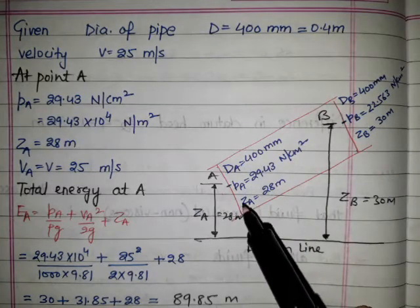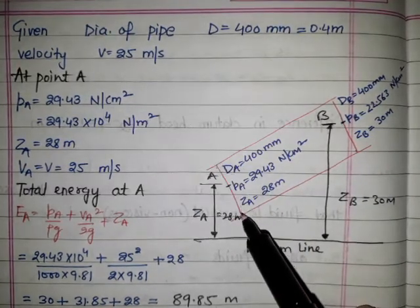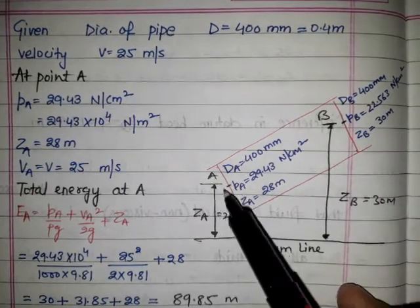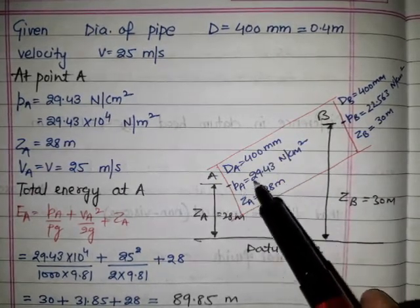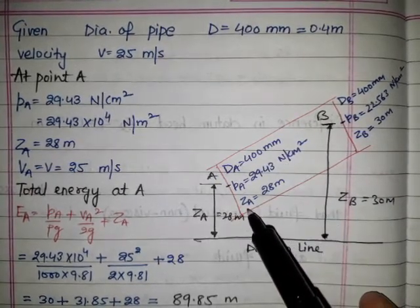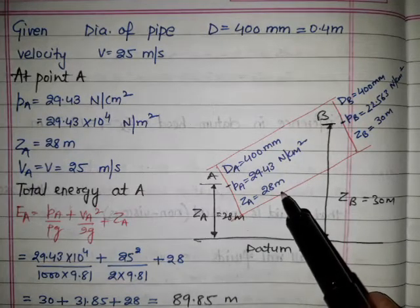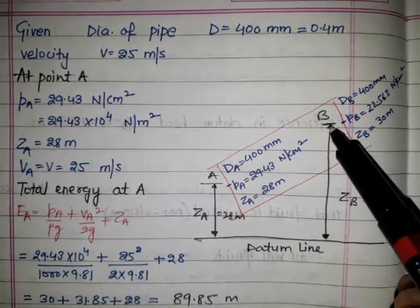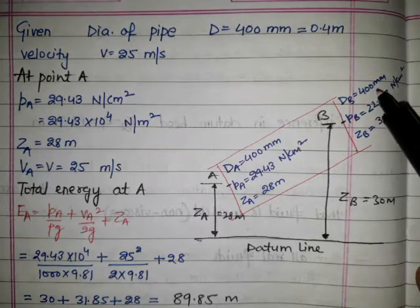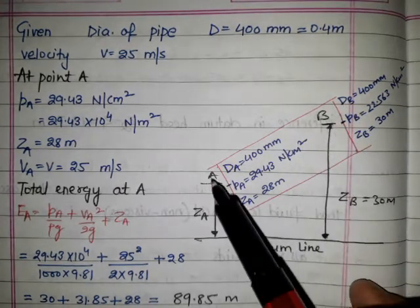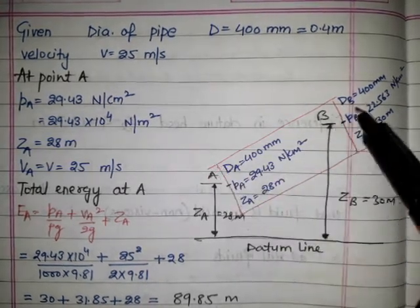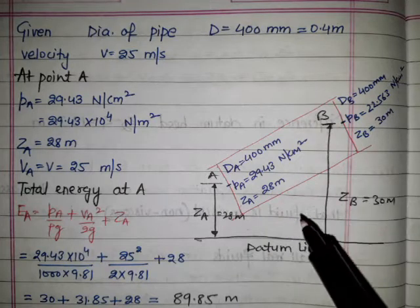This is our section A and this is section B. At section A, diameter, pressure, and height from datum line are given. Similarly at point B, diameter is given because the diameter of the pipe is uniform, so at A and B it equals 400 mm.